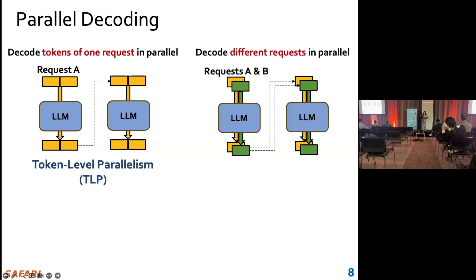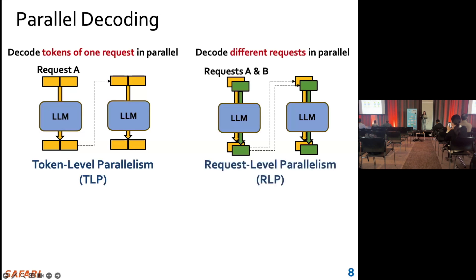Also, we can decode different requests in parallel. The green and yellow tokens are from request A and request B, which are different requests, and we call this request-level parallelism, RLP.